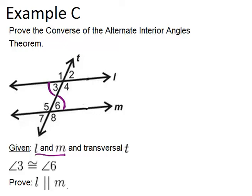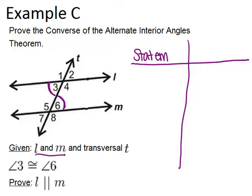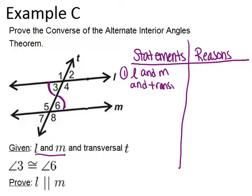And we're trying to prove that L has to be parallel to line M. So let's set up our two column proof with our statements and reasons in order to complete this. So statements go on the left, and reasons are on the right. And remember, we're going to start with our givens, and our two givens are that L and M and transversal T are marked in our picture. And also, angle 3 is congruent to angle 6. And both of these, the reasons I know both of these things is that it was given.